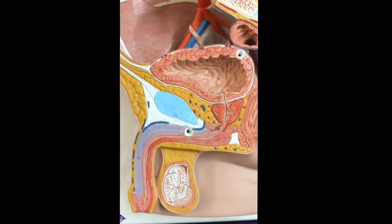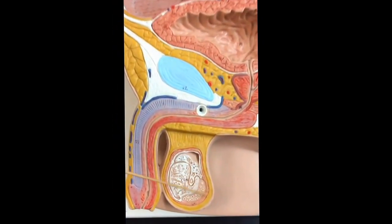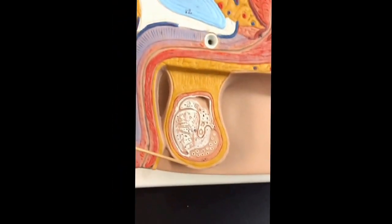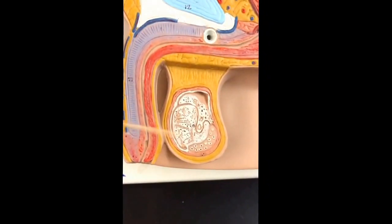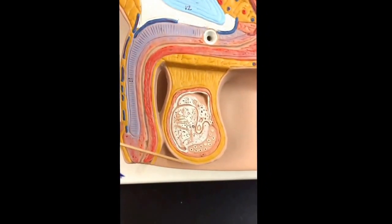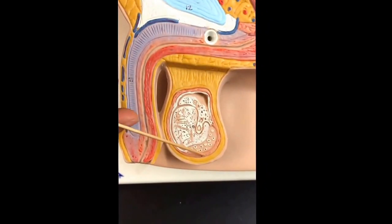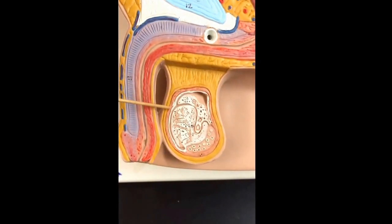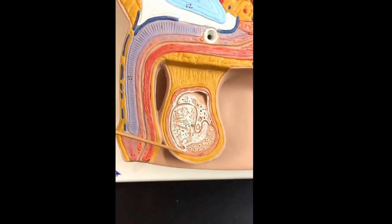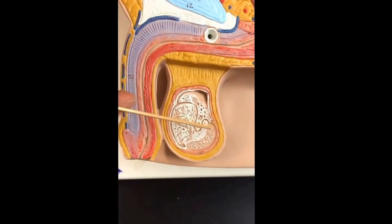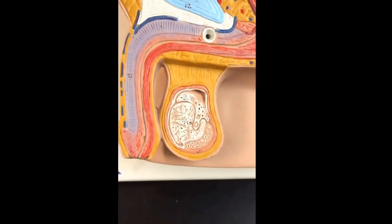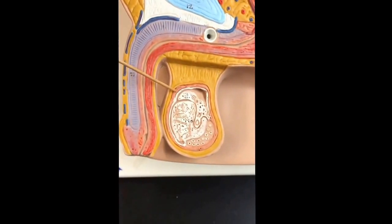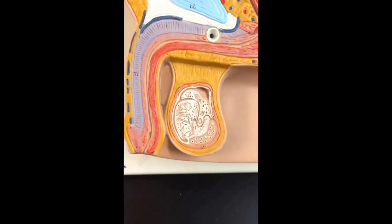Looking at the opened scrotum, we can see the wall of the scrotum — the skin — and then there's a muscle called the cremaster muscle. The cremaster muscle is the extension of the internal oblique, and it acts to raise or lower the testicles.